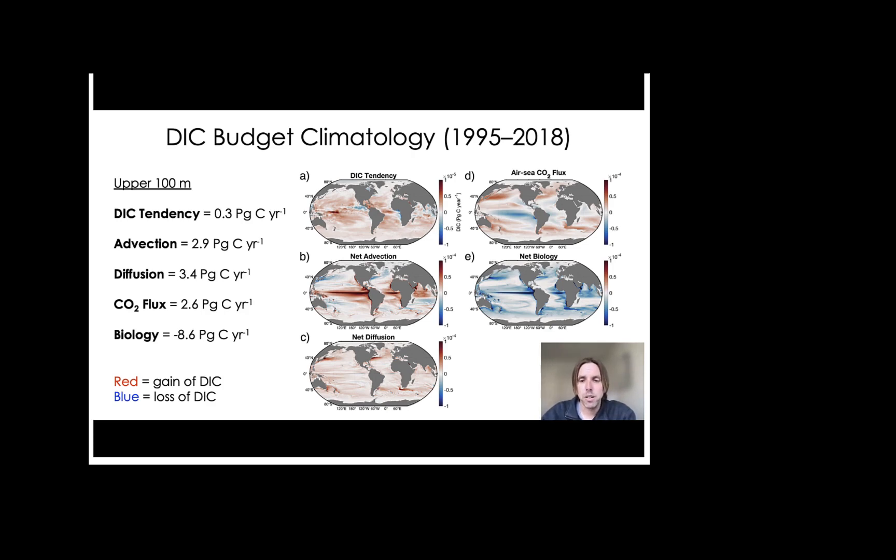And finally, net biology, which has the largest magnitude of all the budget terms here, is tightly coupled with physical processes, advection and diffusion, as those processes transport vital nutrients into the euphotic zone and fuel upper ocean biological productivity. And finally, the time mean values for these budget terms from 1995 to 2018 is shown in bold text on the left-hand side.